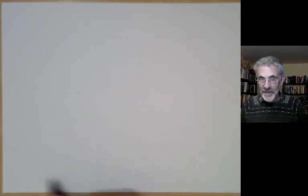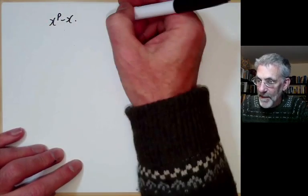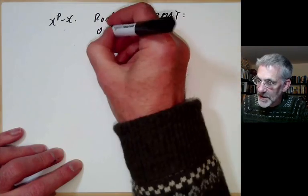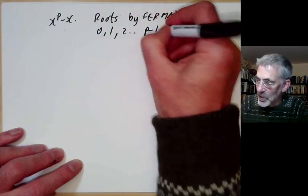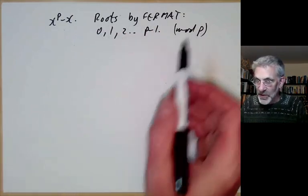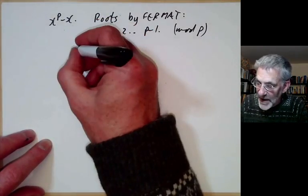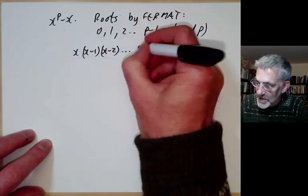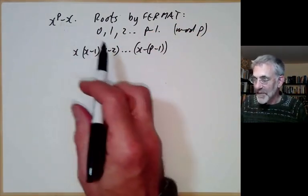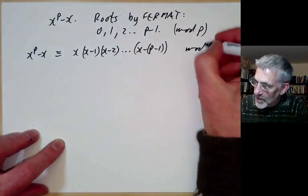Let's look at the polynomial x^p − x. By Fermat's theorem, its roots are just 0, 1, 2, …, p−1 mod p. We can write this polynomial as divisible by x·(x−1)·(x−2)·…·(x−(p−1)), since these are all distinct roots. These polynomials have the same degree and the same leading term, so they must be equal: x^p − x ≡ x·(x−1)·(x−2)·…·(x−(p−1)) mod p.